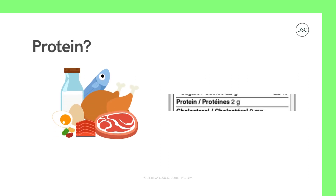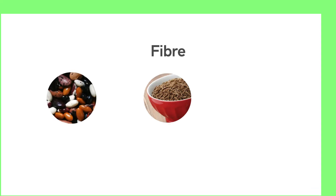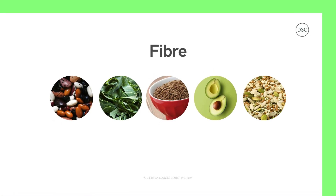Depending on your nutrition goals, you may be looking for more protein as well. Keep in mind there is no percent DV for protein because, according to Health Canada, most Canadians get enough protein in their diet if they're eating a variety of foods, so it's not a health concern. But if you're looking for more protein, you will have to look at the amount in grams and compare that to your goal amount. It might feel a little overwhelming to focus on all of these nutrients, so instead pick one or two to focus on based on your nutrition goals — your dietitian can help you decide.